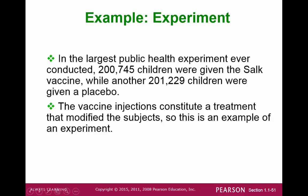By contrast, an example of an experiment would be one where 200,745 children were given some vaccine, while another 201,229 children were given a placebo. This is an example where you're purposely treating one set of children and not treating another, and then you're comparing those results. So in this case, we have an experiment.